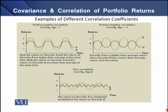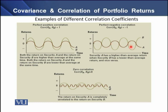On the screen we can see a sample of correlation between two individual assets. In the left panel we have a perfect positive correlation, as both assets' returns are moving in the same direction. In the right panel we have a perfect negative correlation — when the returns of one asset are decreasing, the returns of the other asset are increasing, so for every increase in one asset there is a corresponding decrease in the other asset's return.